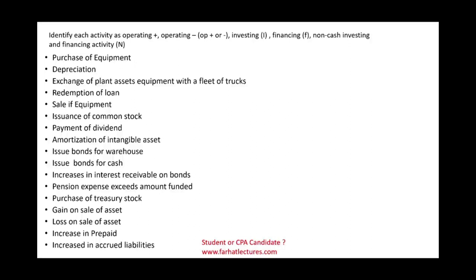Let's start with purchase of equipment. Under which category would we list this transaction — operating, investing, financing, or non-cash investing and financing? If we purchased equipment, that's all we're told, we assume we purchased it for cash. When you buy property, plant, and equipment, this is a form of investing in your business. And since you purchase, it's negative — you have to pay for it. So that's investing and negative.